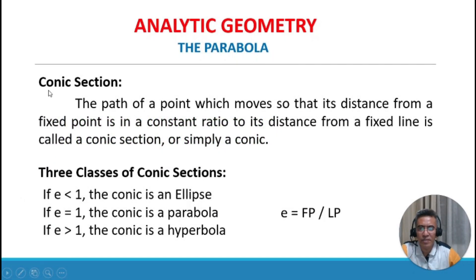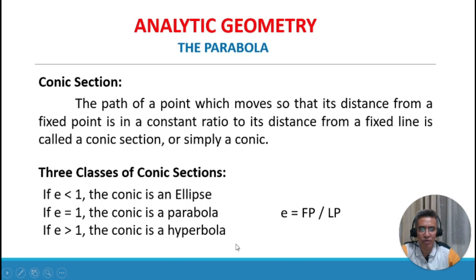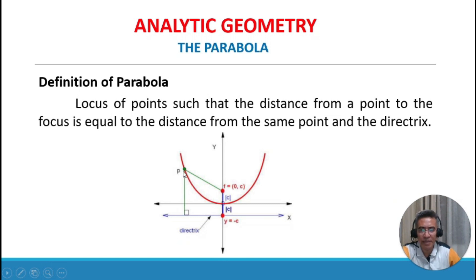A conic section is the path of a point which moves so that its distance from a fixed point is in a constant ratio to its distance from a fixed line. This ratio is called eccentricity e, defined as e equals FP over LP. There are three classes of conic sections: if e is less than 1, the conic is an ellipse; if e equals 1, the conic is a parabola; and if e is greater than 1, the conic is a hyperbola.